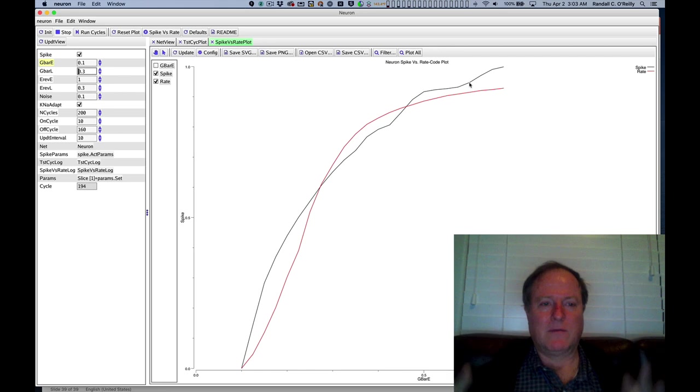So on a grand scheme of things, this is a very reasonable approximation to the actual empirical rate of spiking.